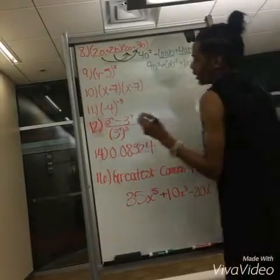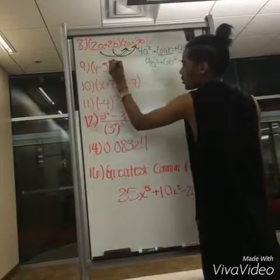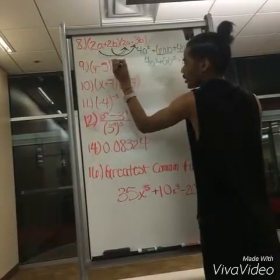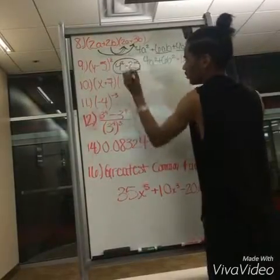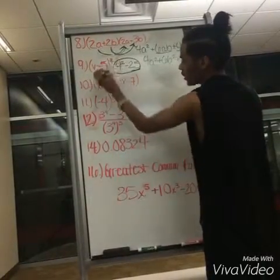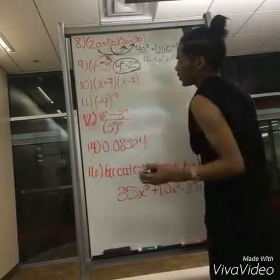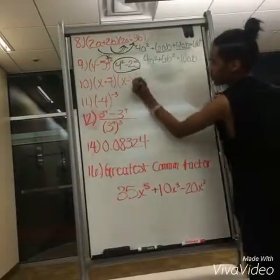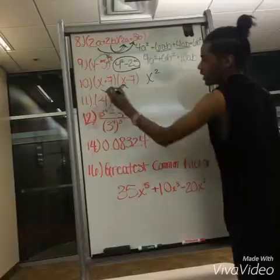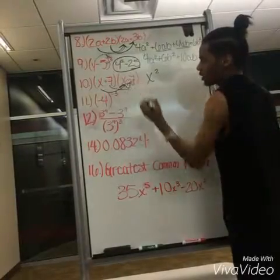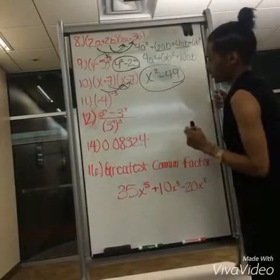For number nine, it'll be y squared minus 25, because 5 squared is 25 and y times y is y squared. For number ten, you would do x times x, which gives you x squared, and then positive 7 times negative 7 gives you negative 49. And that's for number ten.